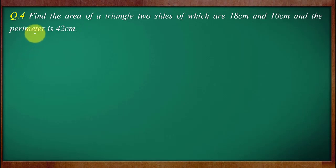So the question number four is find the area of a triangle two sides of which are 18 centimeters and 10 centimeters and the perimeter is 42 centimeters.